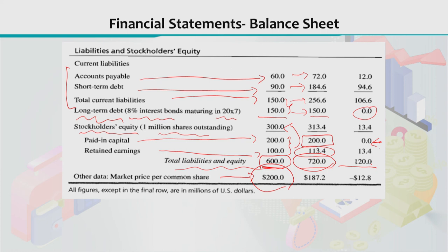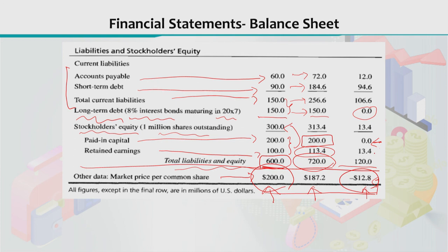Looking at the market price per common share: in 2000 the share price of company XYZ was $200, but it has now reduced to $187.2 in 2001, showing a fall of $12.8 per share. This data is taken from the stock market and is not directly part of the balance sheet. In the balance sheet itself, you only account for total liabilities and equity, current assets, and current liabilities — and with their combination, the balance sheet is established.